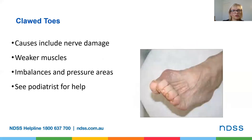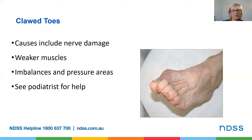This picture shows clawed toes, which are often caused by nerve damage in the feet. It can result in weaker foot muscles, leading to imbalances and pressure areas. If your toes are still flexible, you can move them toward their natural position with your hands. If you work out, try to pick up objects with your toes to avoid stiffness. Wear shoes with plenty of room for your toes, especially if your toe becomes stiff, and avoid shoes that are too tight or have high heels.